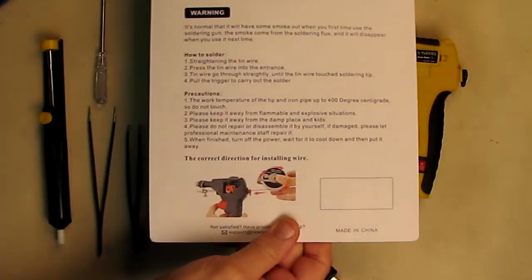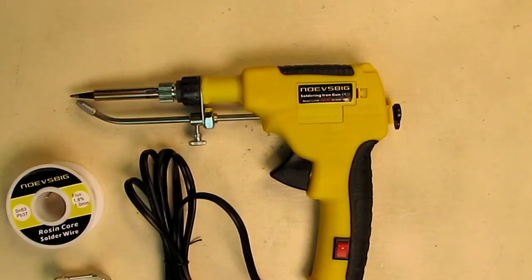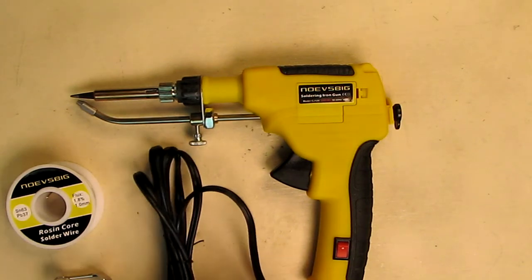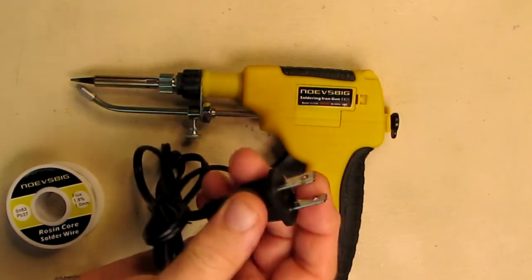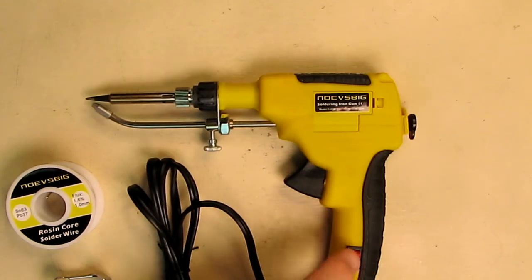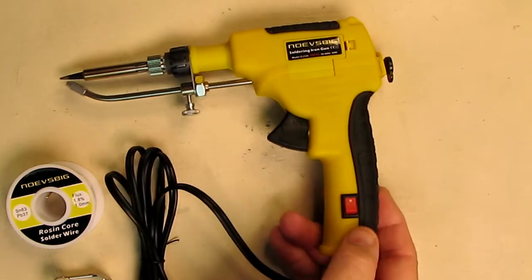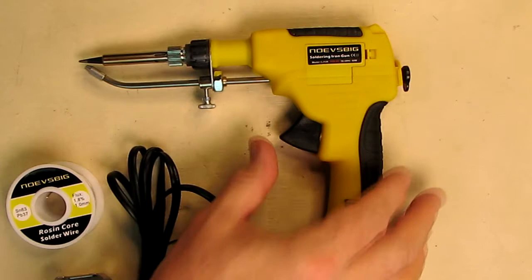We're going to be testing this out. The unit comes with simple instructions on the back of the product itself, the cardboard showing you how to feed the wire. Let's take a closer look at the gun itself. You see it has a nice flexible cord with a USA polarized plug on there, 120 volts, has a little small switch right there which is nice.